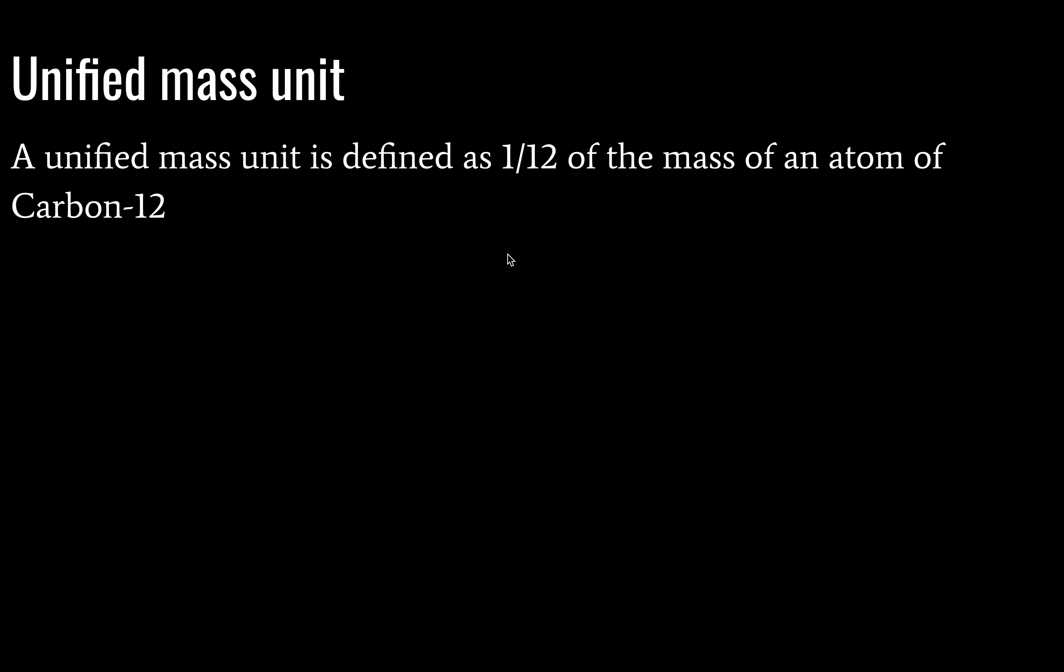A unified mass unit is defined as one twelfth of the mass of an atom of carbon-12. So there are 12 nucleons in carbon-12. This gives us a mass for both protons and neutrons. This is the unified mass unit given in your textbook to seven significant figures. Why a question mark?